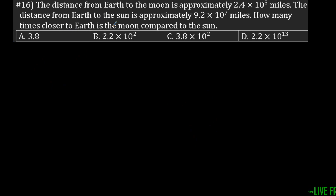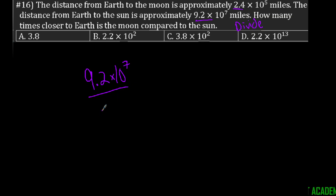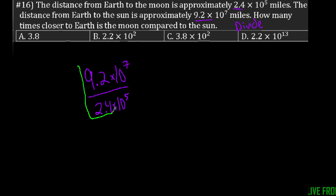Working on number 16, it says the distance from Earth to the Moon is approximately 2.4 times 10 to the fifth power miles. The distance from Earth to the Sun is approximately 9.2 times 10 to the seventh power miles. How many times closer is the Earth to the Moon compared to the Sun? So we have to divide these two values.